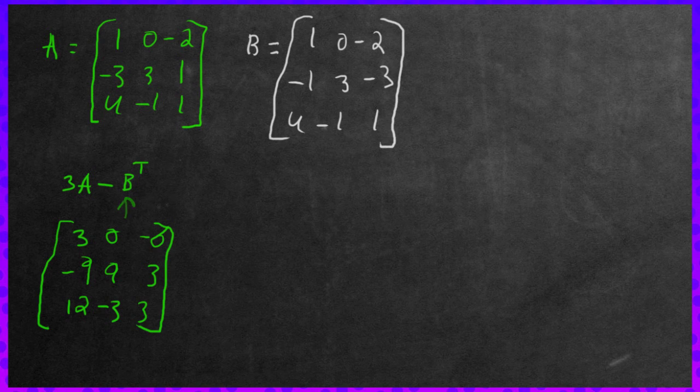Now we have to find the transpose of B. So subtract the transpose of B. So to find transpose, we just take all of the rows and we convert them into columns. So the first row here, we change to a column. That'll be 1, 0, negative 2 for the first column. Now this row here becomes a column. It'll be negative 1, 3, negative 3, and lastly 4, negative 1, and 1. And that would be the transpose of B.